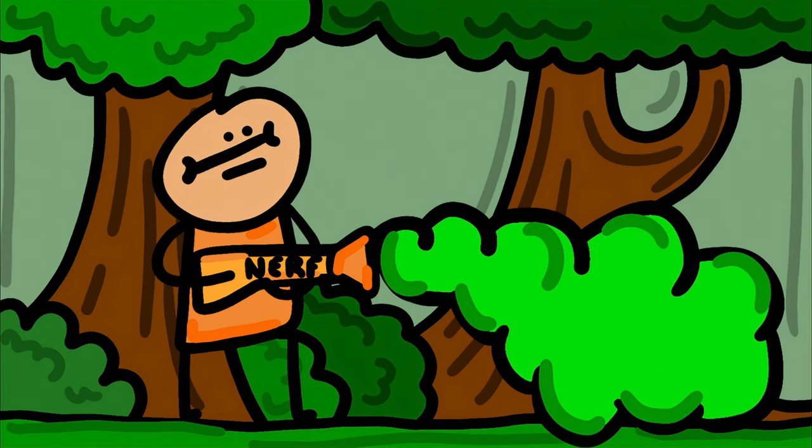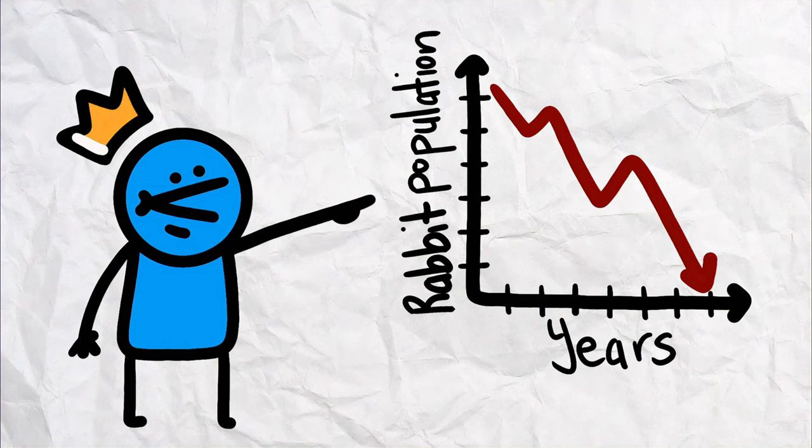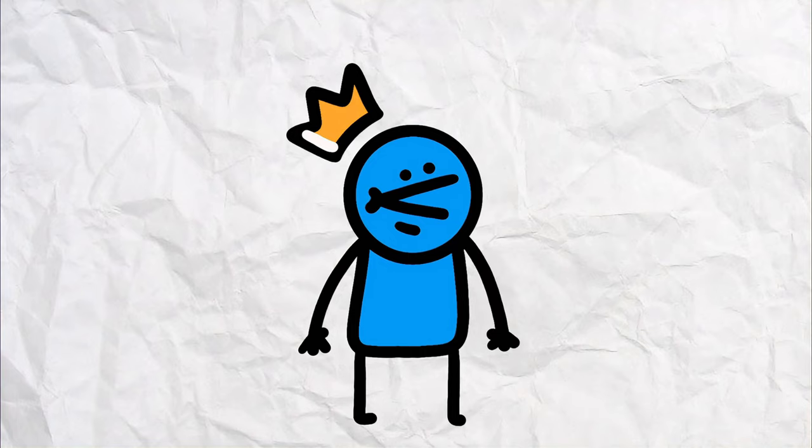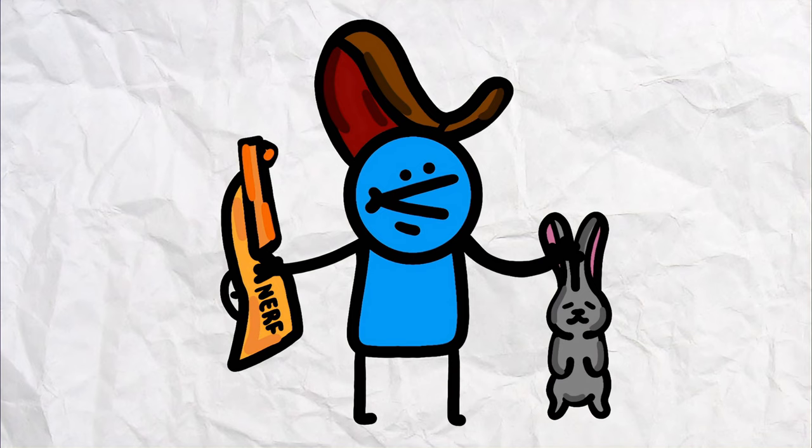And fun fact, myxomatosis has been used as a form of biological control to reduce rabbit populations in areas where they are considered pests. Now that is just a douchebag way of getting rid of rabbits, just shoot them like the rest of us.